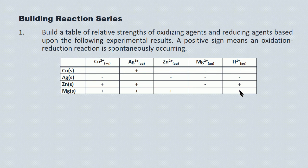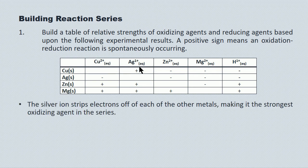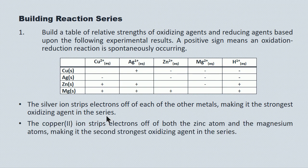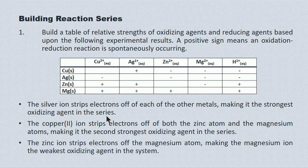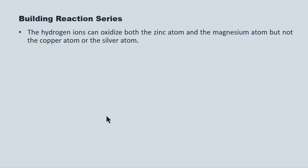In terms of relative strength of oxidizers: the silver ion strips electrons off each of the other metals, making it the strongest oxidizing agent. The copper ion strips electrons off both zinc and magnesium, so it's number two. The zinc ion oxidizes magnesium, making zinc the third strongest metallic oxidizer, and magnesium is the weakest metallic oxidizer. The hydrogen ions oxidize both zinc and magnesium, but not copper or silver — so the hydrogen ion ranks as the third strongest oxidizer overall.